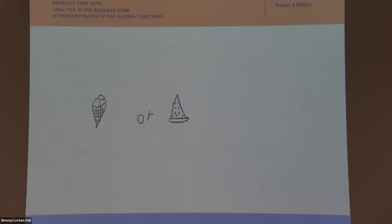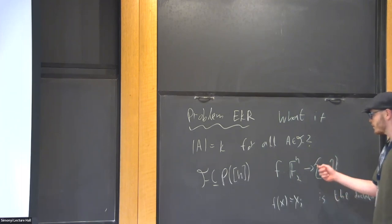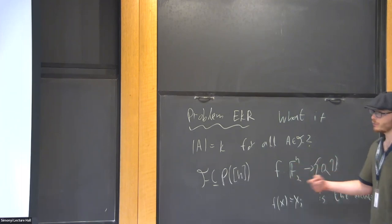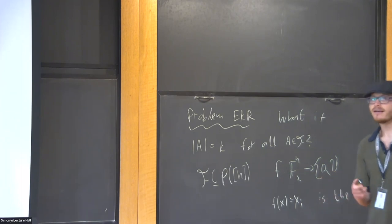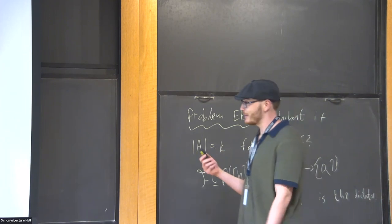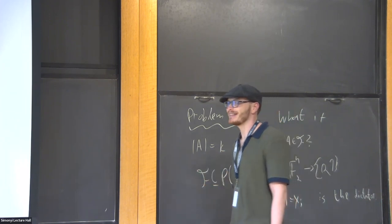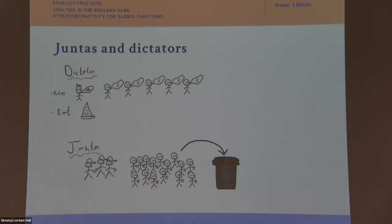This terminology comes from social choice: we have a Boolean function to choose between two alternatives, say pizza and ice cream. One such function is the dictator — we just listen to the dictator to decide what to eat.